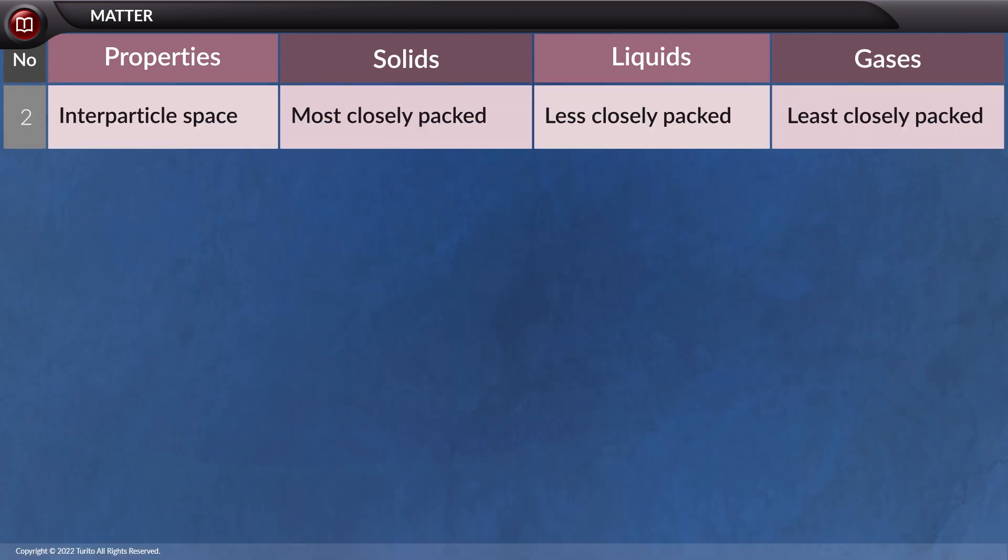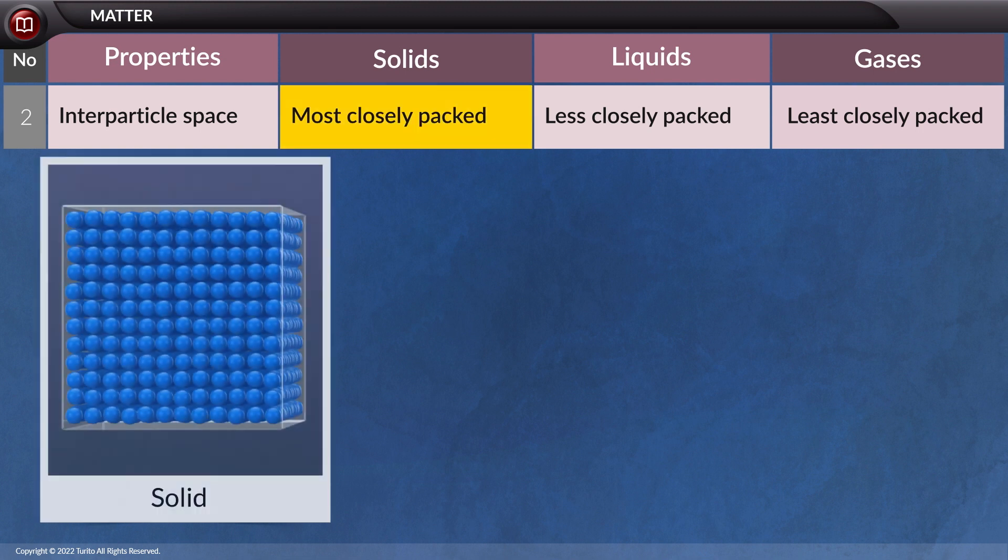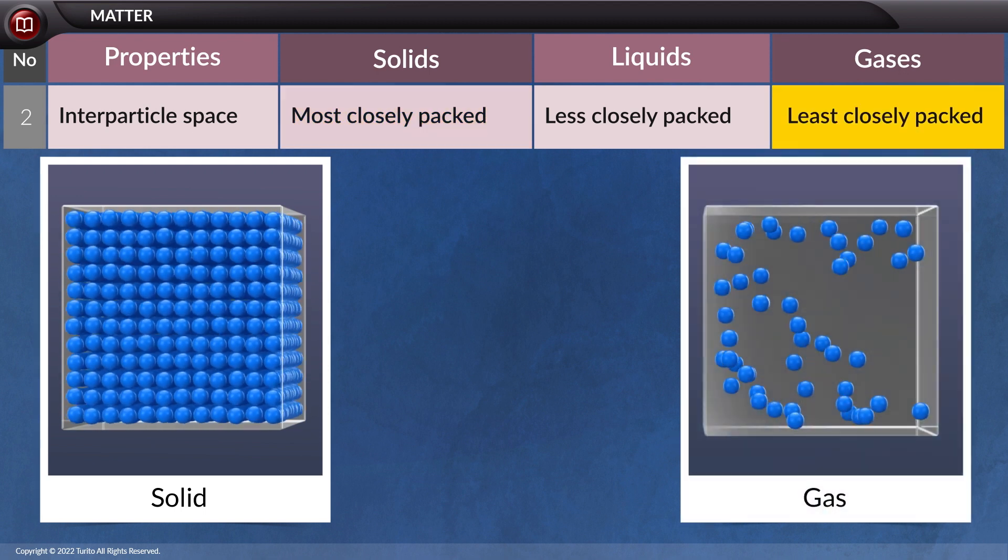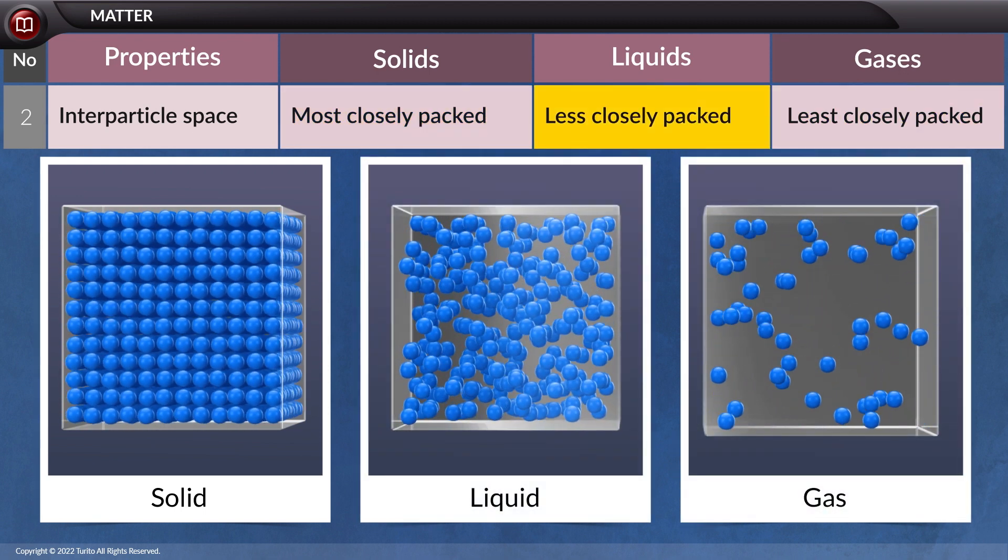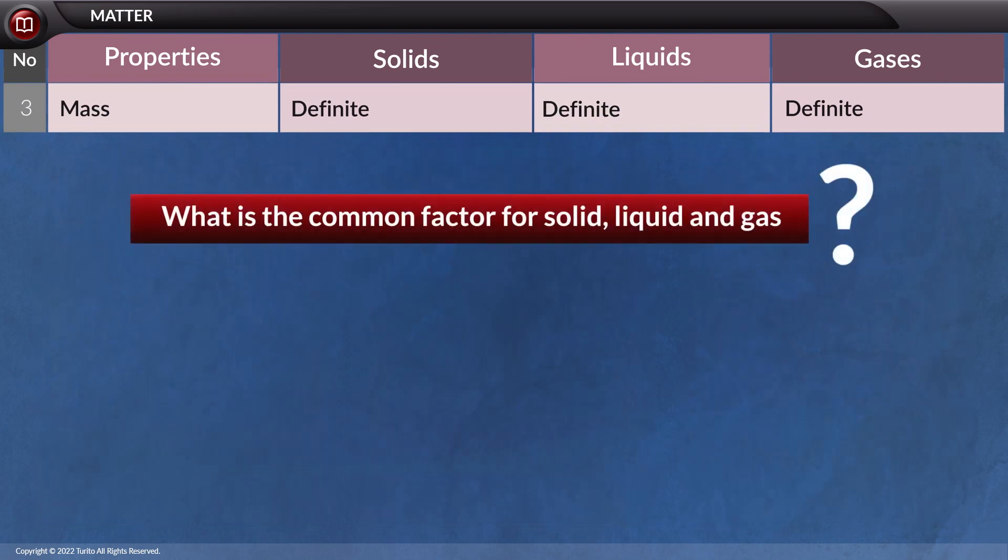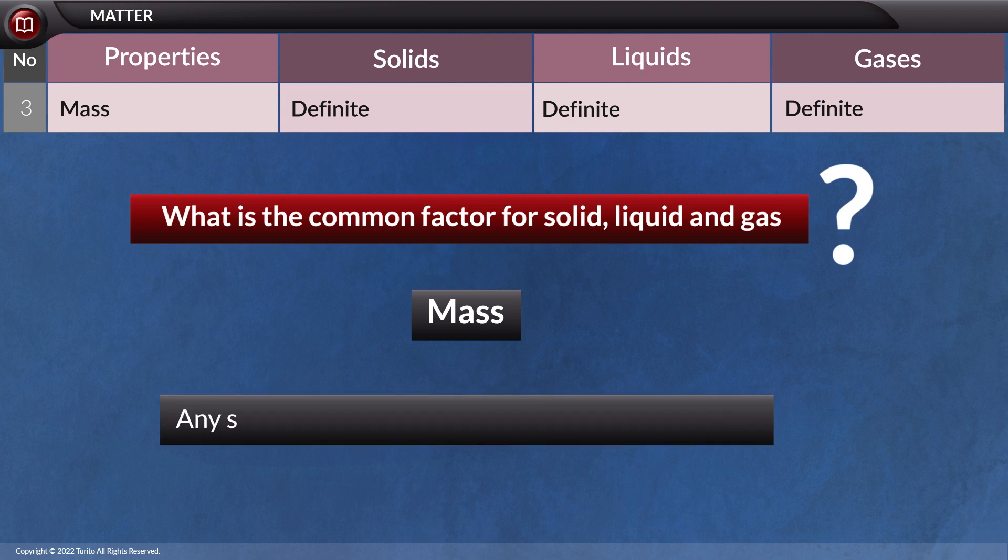The interparticle space is the next property. The interparticle space in solids is quite low. It is maximum in gases and intermediate in liquid. Can you tell me a common factor about any solid, liquid, and gas? The most basic property of any form of matter is its mass. Any state of matter will always have a specific mass.